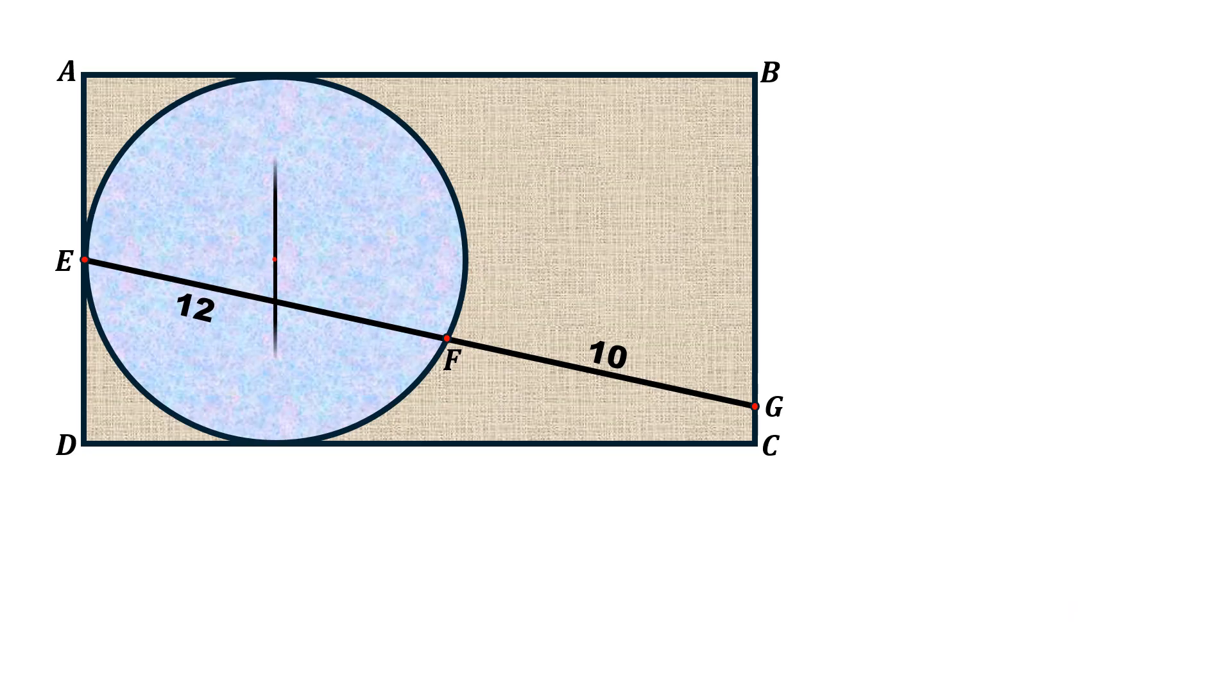Since this line is the diameter of the circle and also equal to AD, and the diameter of the circle is equal to two times the radius of the circle, let us call each side of this length from the central point as R.